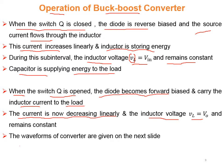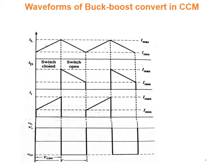The waveforms of the buck-boost converter are shown on the next slide in the continuous conduction mode. I_L is the current through the inductor, I_D is the current through the freewheeling diode, this is the input or source current, and VL is the voltage across the inductor.